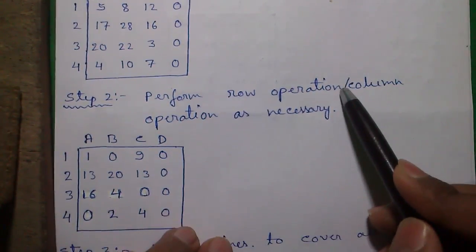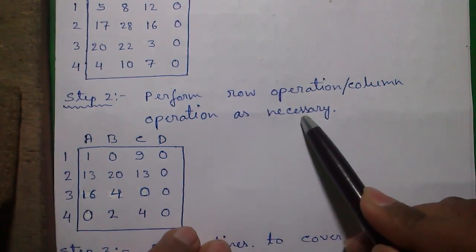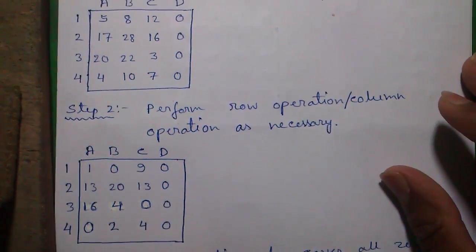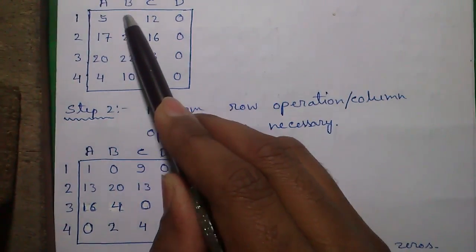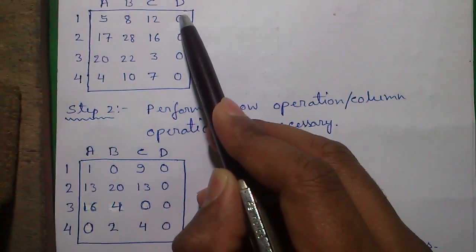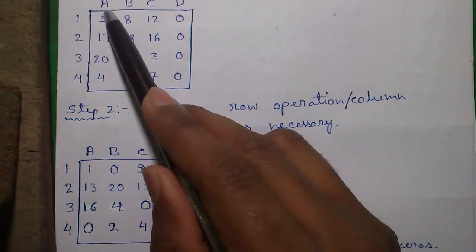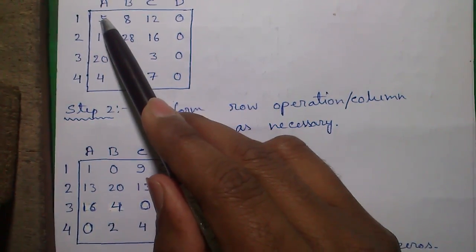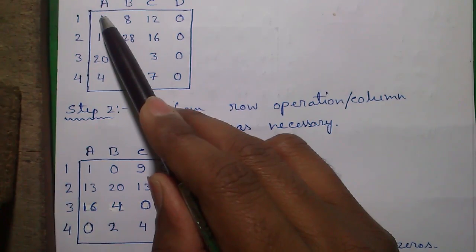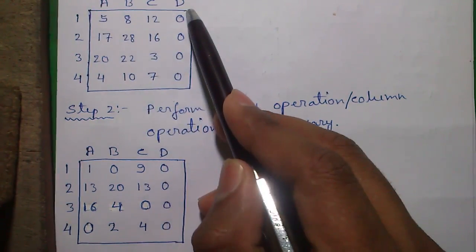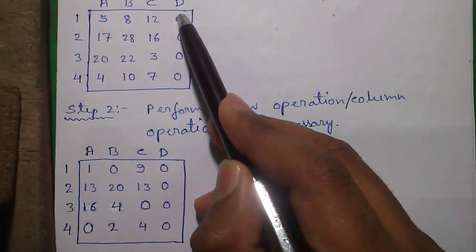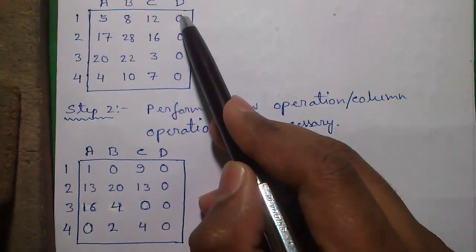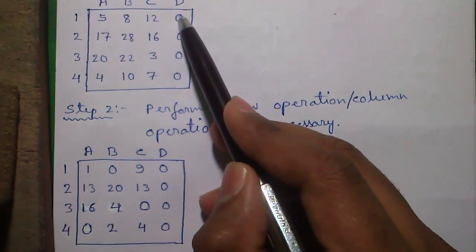Next, perform row operation or column operations as necessary. The row operation means find the smallest number among the rows or among the columns, and for rows subtract that number from each of the numbers in the row. So here in each row the smallest number is 0. If we subtract 0 from each of the elements, the numbers will be same.